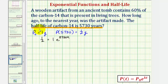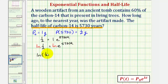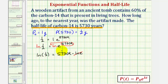We can drop the one, so we have one-half equals e raised to the power of 5,730k. Now we'll take the natural log of both sides of the equation. We have natural log of one-half equals, and applying the power property of logs, we write the exponent as a product: 5,730k times natural log e. Since natural log e equals one, we divide both sides by 5,730 to determine the exponential decay rate.